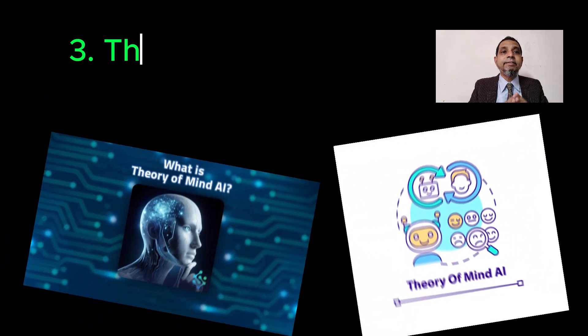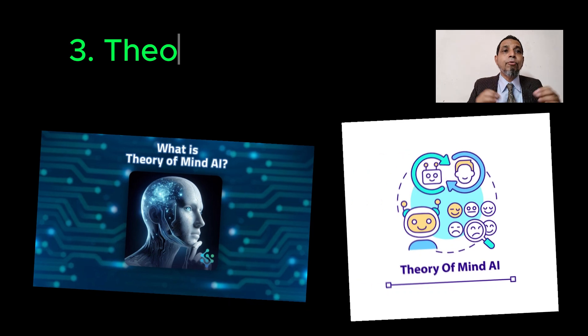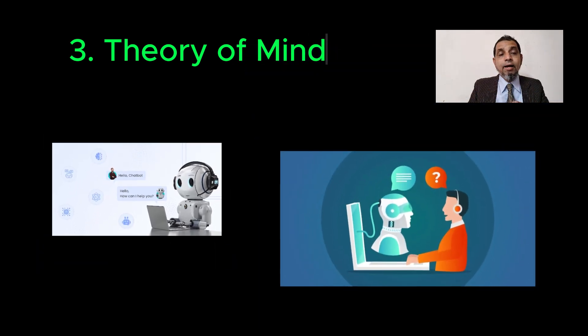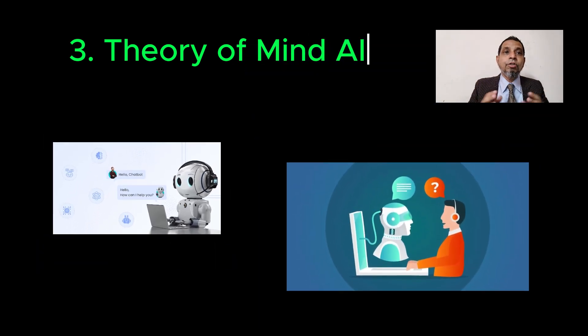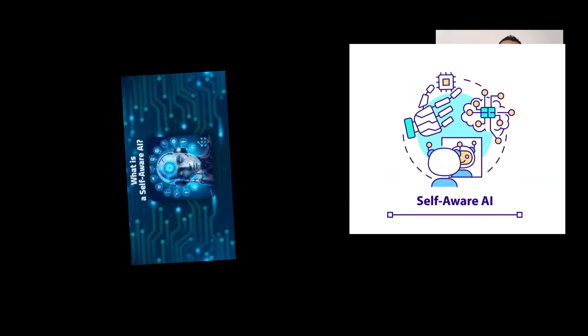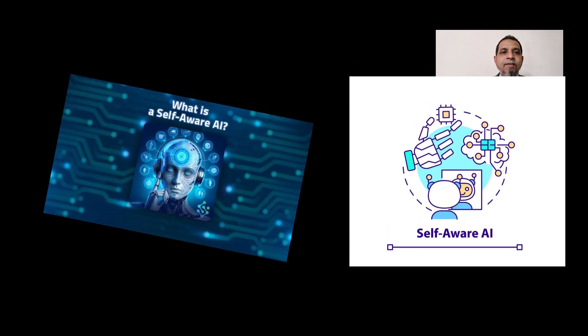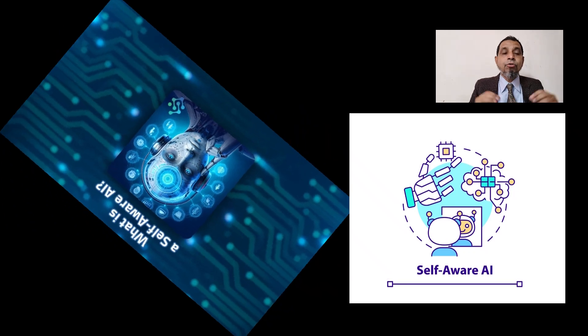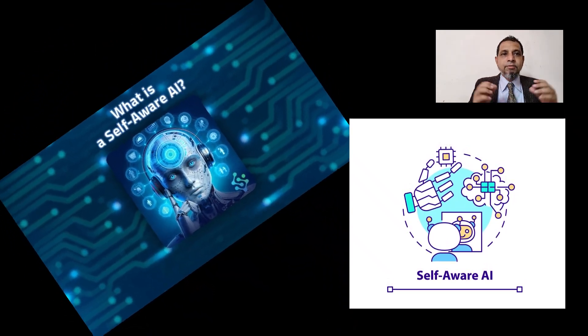Number three, theory of mind AI — can sense and respond to human emotions and also perform the tasks of limited memory machines; personal assistants and chatbots are examples. Number four, self-aware AI — can recognize others' emotions, has a sense of self-awareness, and exhibits human-level intelligence; this is considered the final stage of AI, and social robots are given as an example of self-aware AI.